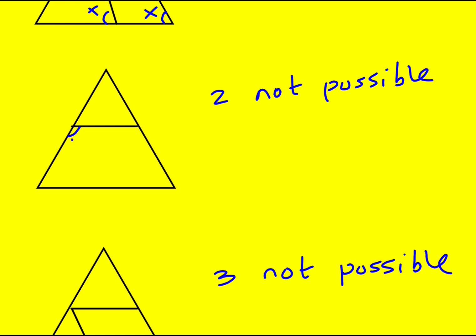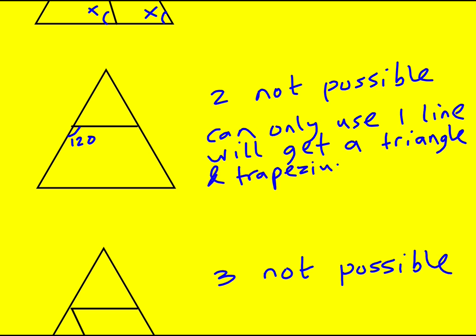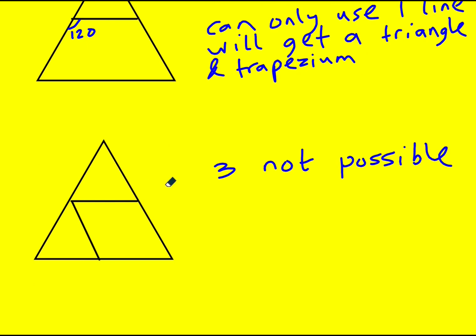We can only use one line to split it. Three is not going to be possible. Now there are going to be more ways to try and do it, but like once you've got one triangle, you're not going to want to draw your third line sort of up here, there's no way that's going to work. So we'll get, at best two triangles.